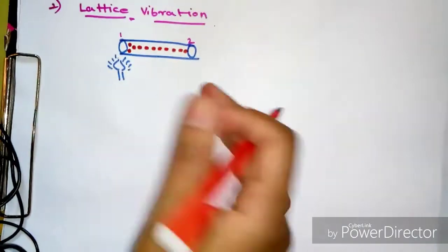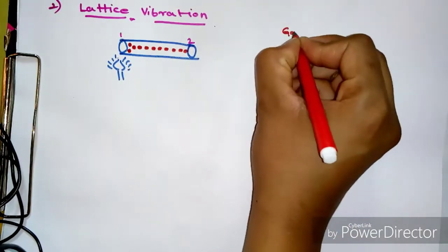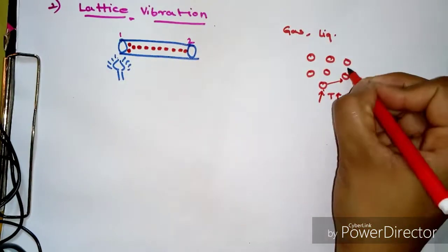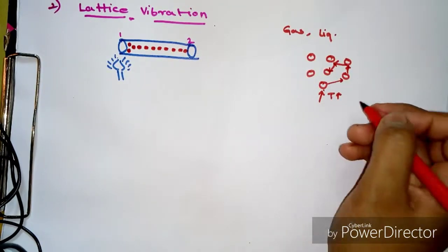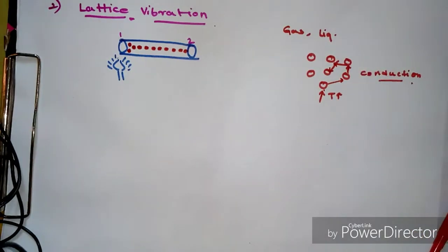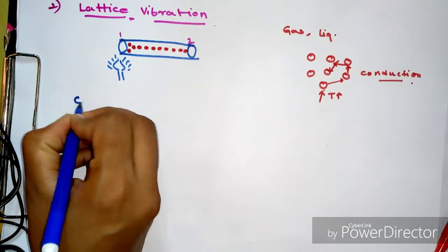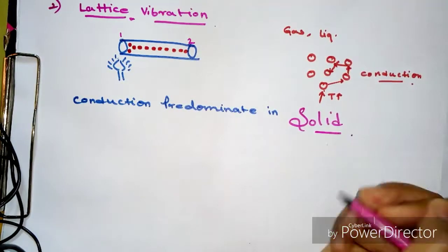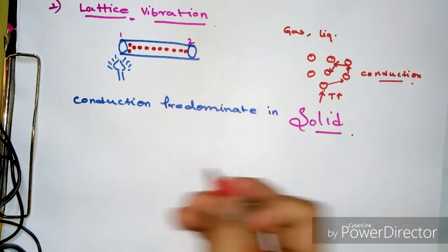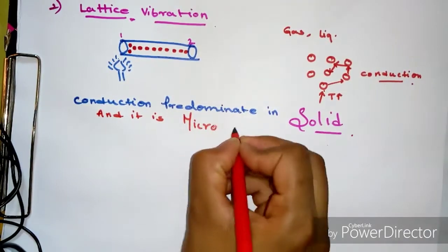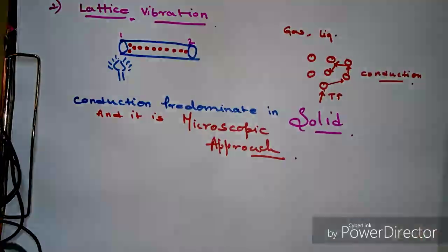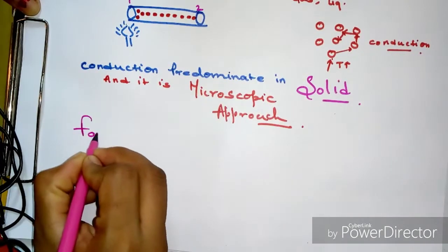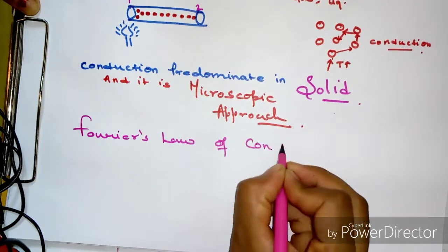In the case of gas or liquid, molecules are not closely packed. When the temperature of one molecule increases, it moves and collides with adjacent molecules, and conduction takes place through collision. However, conduction is very much predominant in solids only — it does occur in liquids and gases but is dominant in solids. Conduction heat transfer is a microscopic phenomenon because we cannot see it with the naked eye.